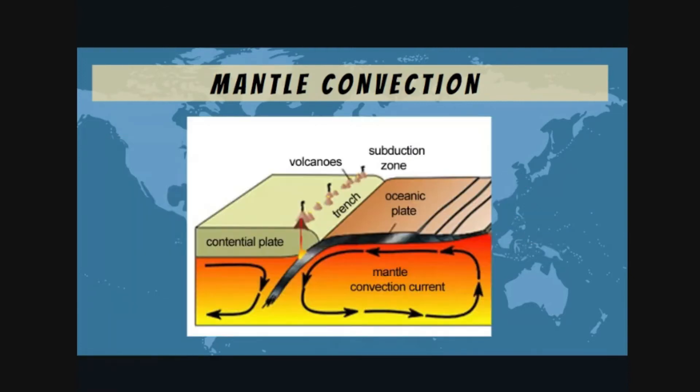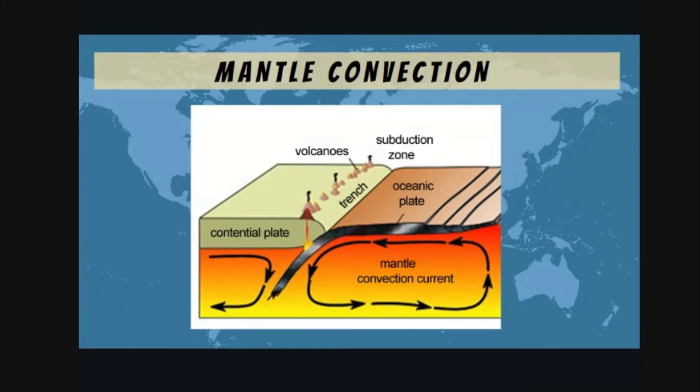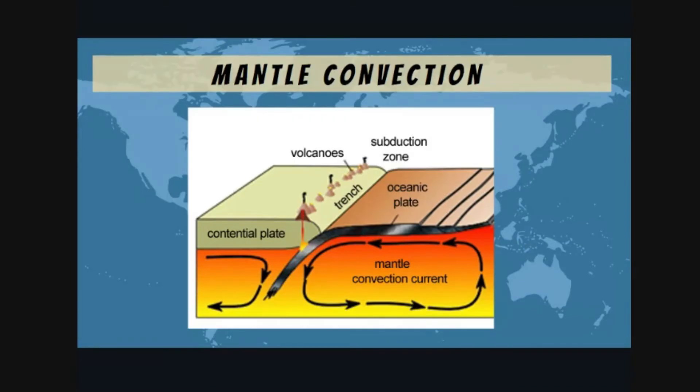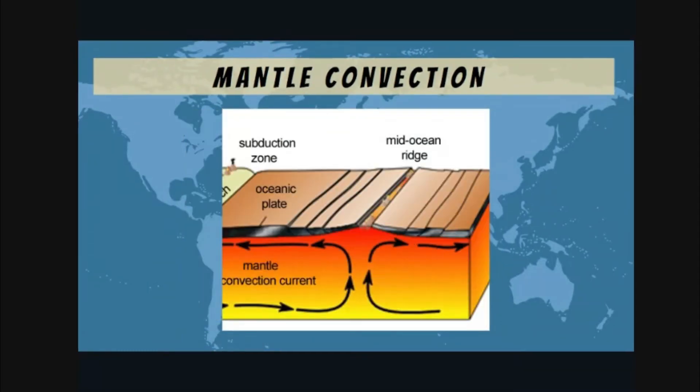For example, convergent plate boundary. You can see here the direction of the convection cell or convection current. On the left side, the convection cell flows in clockwise direction; on the right side, counterclockwise direction. This movement of the convection cell in different directions allows the plates above them to move towards each other.